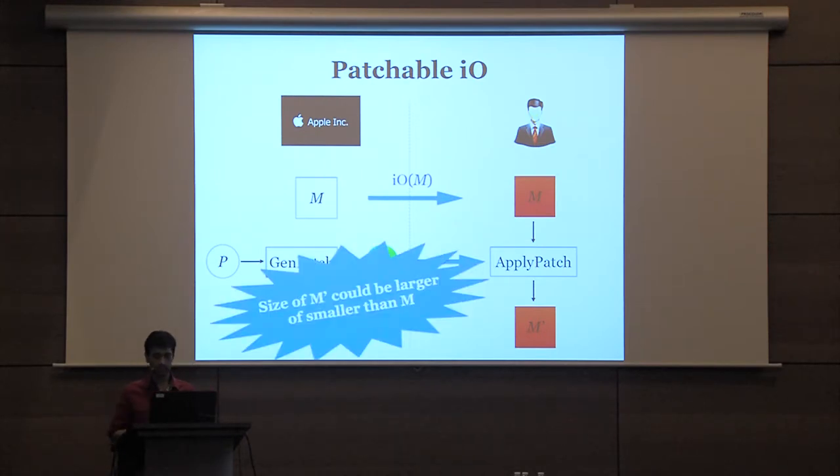Apple sends this encoding of P to the user, who runs an apply-patch algorithm on the original obfuscated Turing machine M along with the secure patch P, to get an obfuscation of the new machine M prime. The gen-patch and apply-patch algorithms are what differentiate this from the standard definition of IO for Turing machines. The size of M prime could be much larger or smaller than M — it is unrelated to the size of the original machine.